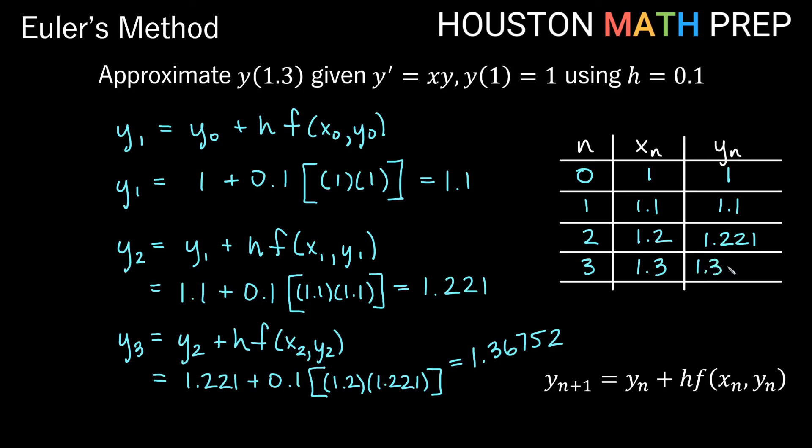So we'll say 1.36752 and if it's asking for an approximation at 1.3 for an x value that's what we have here so our y of 1.3 is going to be this 1.36752. All right everyone in our next video about improved Euler's method we'll be working out this same problem using the other method. Check that out. Thanks for watching. We'll see you then.